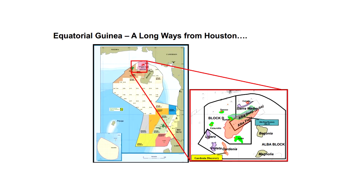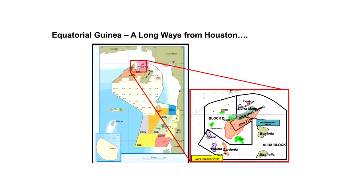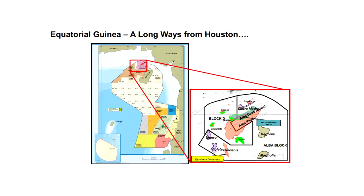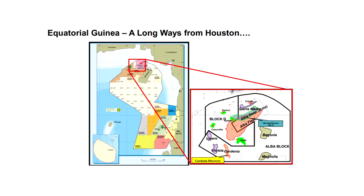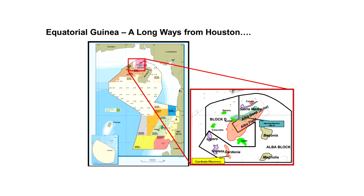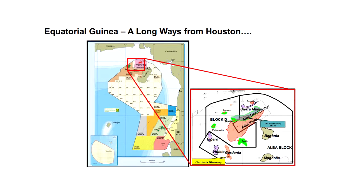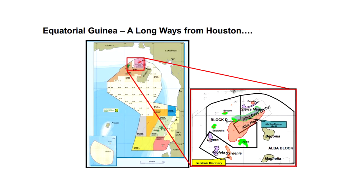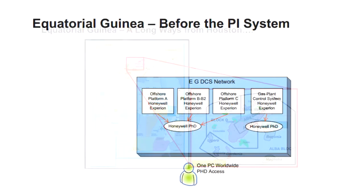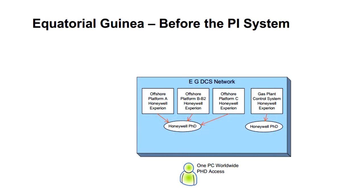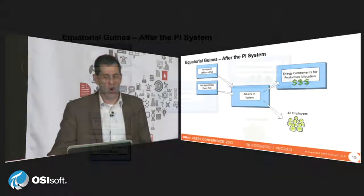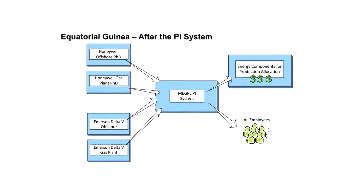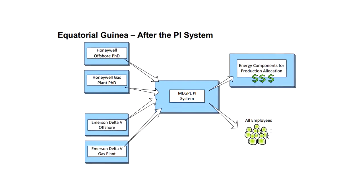Equatorial Guinea is offshore. When we had a control system only without Pi, you had kind of standard stranded data, and only one PC worldwide could look at this important asset. So after the Pi system, we have a much more integrated system in EG.